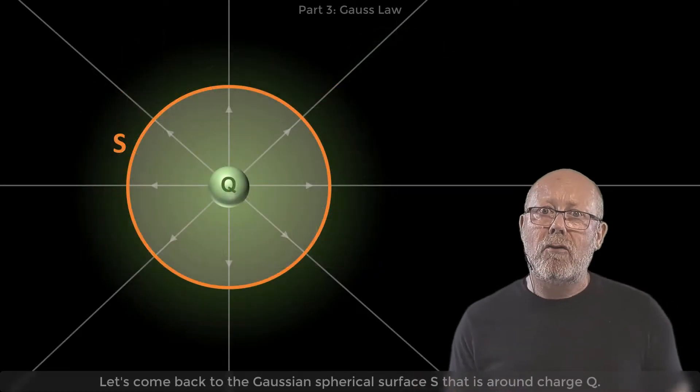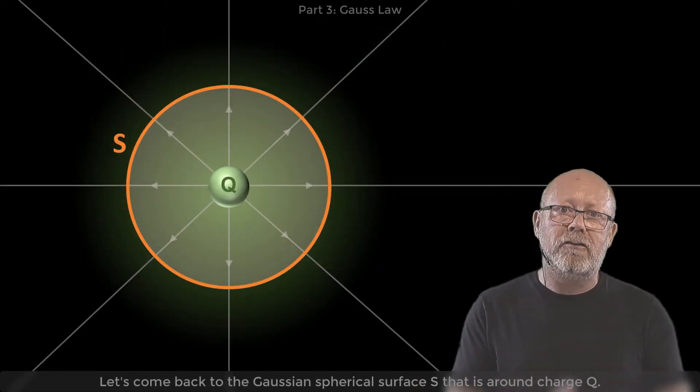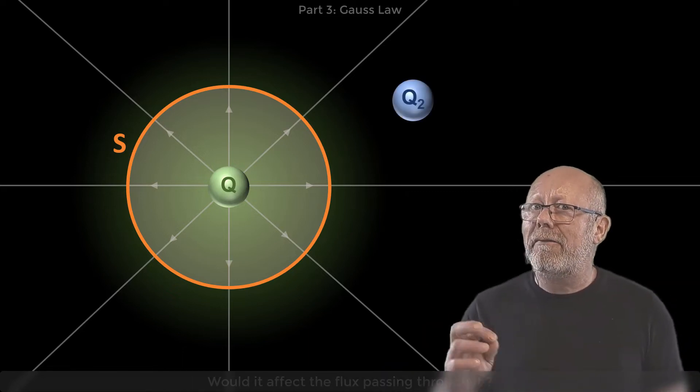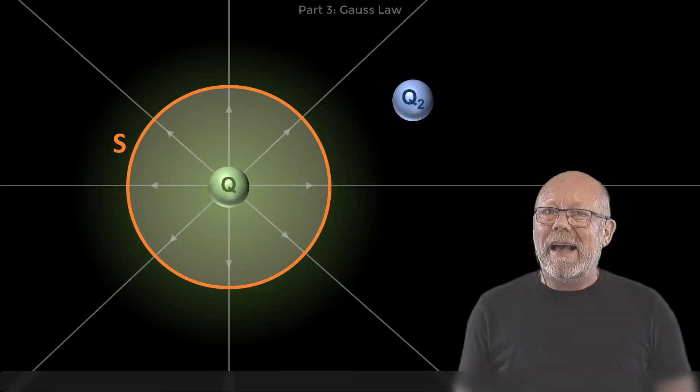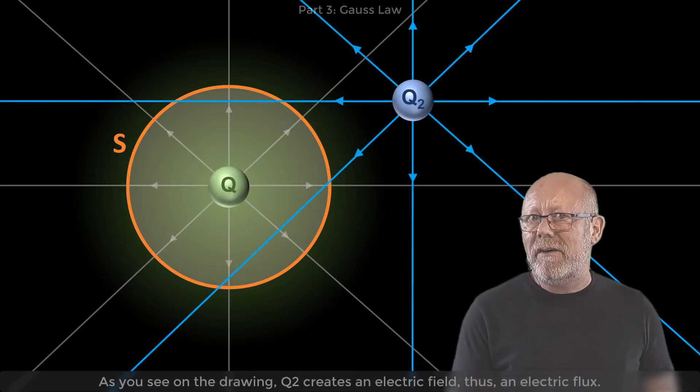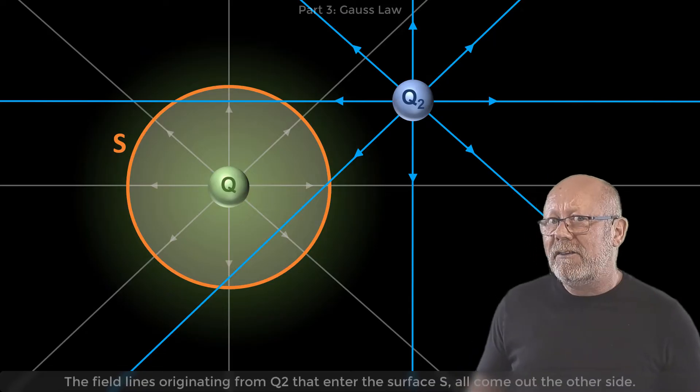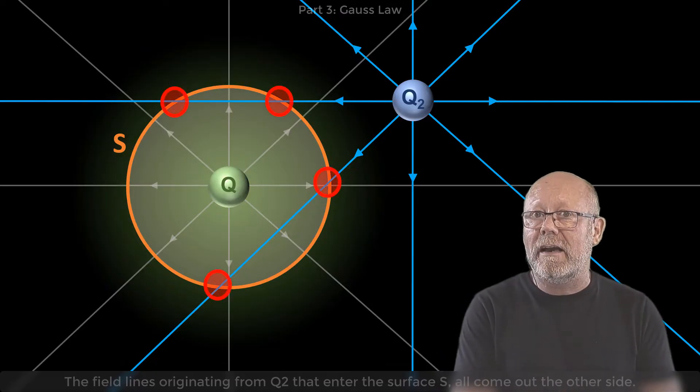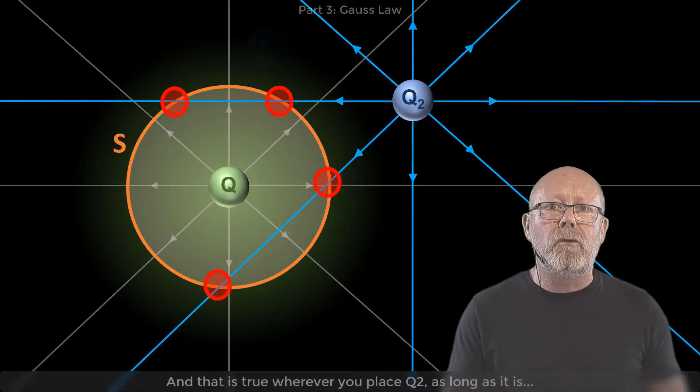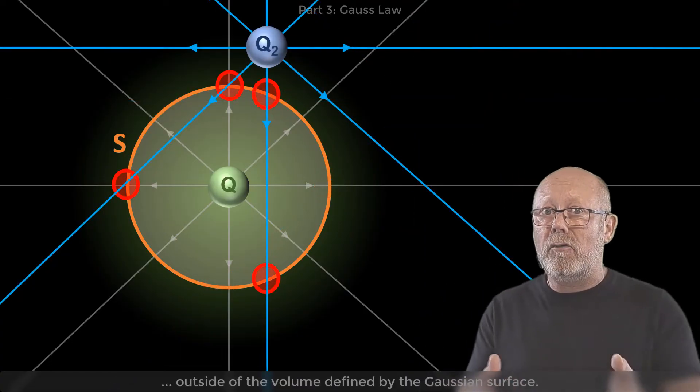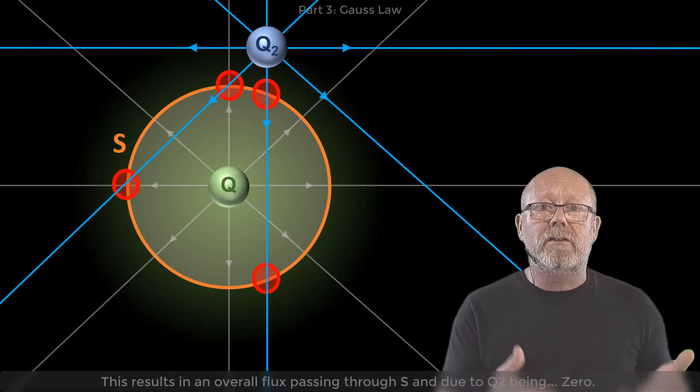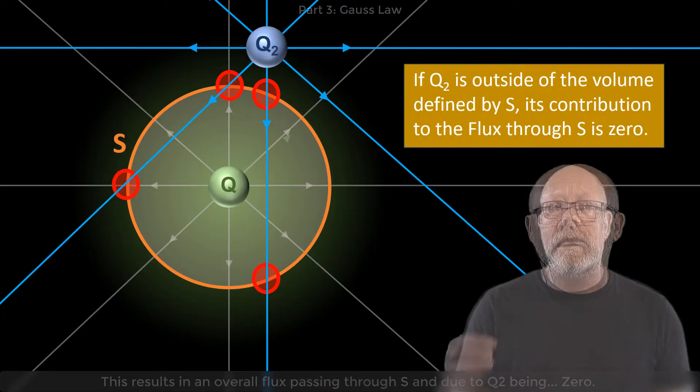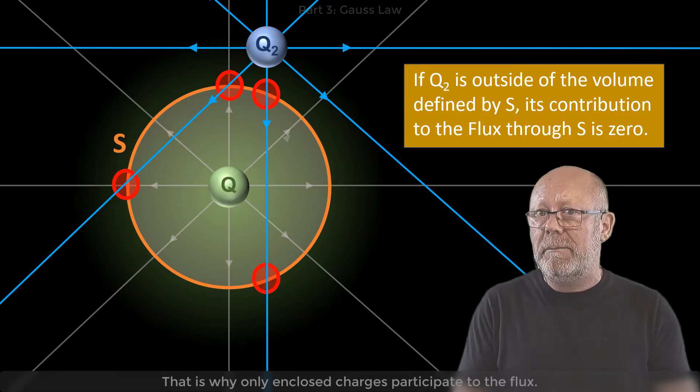Let's come back to the Gaussian spherical surface S that is around the charge Q. What if I placed another charge Q2 outside of that surface? Would it affect the flux passing through it? As you see on the drawing, Q2 will create an electric field, thus an electric flux. The field lines originating from Q2 that enter the surface S will all come out the other side. And that is true wherever you place Q2, as long as it is outside of the volume defined by the Gaussian surface. This results in an overall flux through S due to Q2 being zero. That is why only enclosed charges participate to the flux.